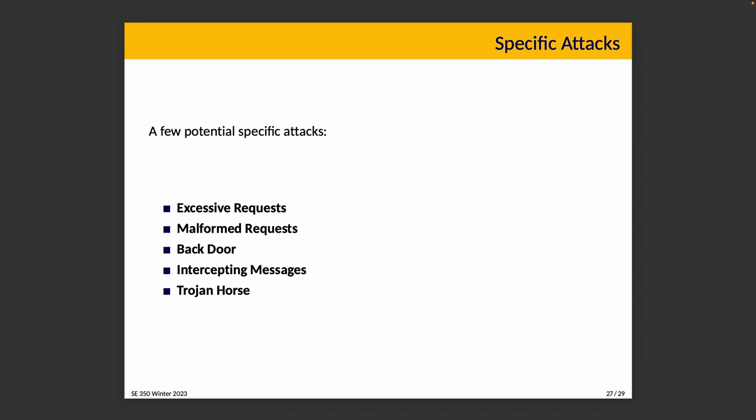Backdoor: sneaking some code into a program that allows normally unauthorized access to the system. Intercepting messages: observing the communication between systems and intercepting messages to change them or to learn information you otherwise shouldn't have — this is sometimes called a man-in-the-middle attack, though perhaps person-in-the-middle is better. Trojan horse: tricking someone into installing something that contains a hidden payload that can carry out one of the bad behaviors above.